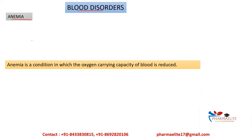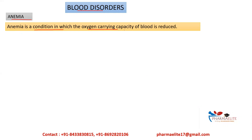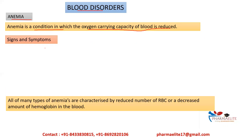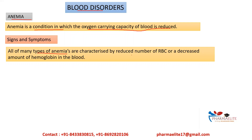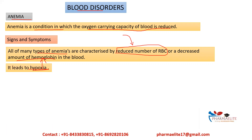The first disorder is anemia. Anemia is a condition in which the oxygen-carrying capacity of blood is reduced. Many types of anemias are characterized by a reduced number of RBCs or decreased amount of hemoglobin in the blood. One RBC contains around 280 million molecules of hemoglobin, which carries oxygen and delivers it to various body cells. If the number of RBCs or hemoglobin is reduced, the oxygen amount is also less, leading to hypoxia — meaning lack of oxygen.